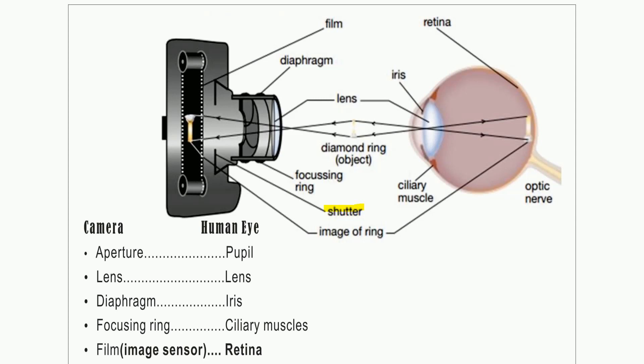The digital camera has a very strong resemblance with the human eye. In a digital camera, there is no film — earlier film was used, but now an image sensor is there in place of the film. That image sensor is just like the retina of our human eye.